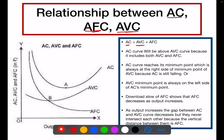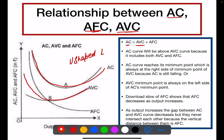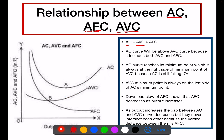The second point is that the AC curve and the average variable cost curve are both U-shaped curves. They are U-shaped because of the law of variable proportions, as we have studied in the chapter on production. So these two cost curves are U-shaped curves.